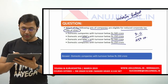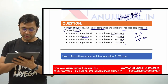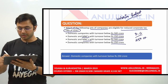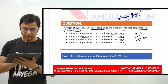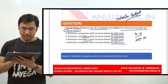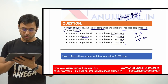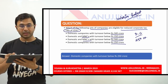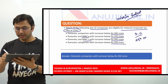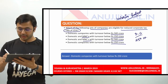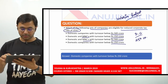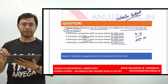The next question is: which of the following sets of companies are eligible for the reduced corporate tax rate of 25%? This has been picked up from the interim budget. The options are domestic companies with turnover below 500 crore; domestic and MNCs with turnover below 250 crore; domestic and MNCs with turnover below 500 crore; and domestic companies with turnover below 250 crore. The answer is D — domestic companies with turnover below or equal to Rs 250 crore.